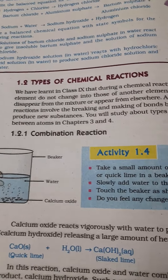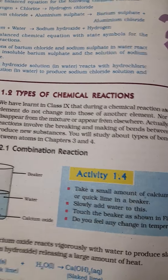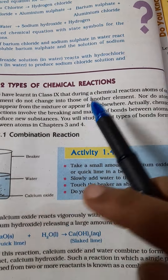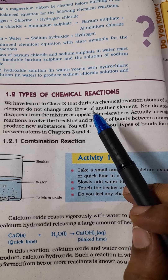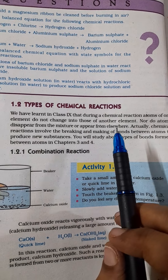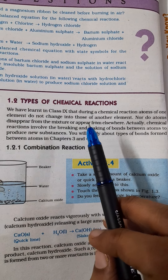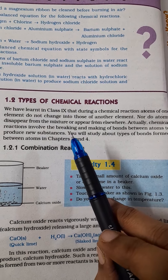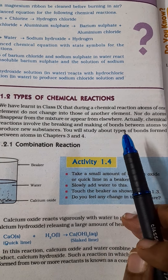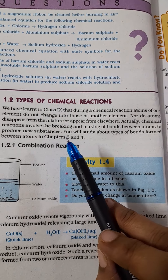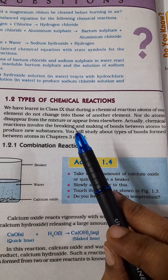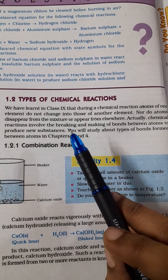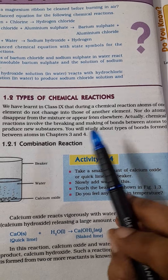Today I will be continuing with the types of chemical reactions. Now, you have already learnt what is meant by a chemical reaction. In Class 9 also you learnt that during chemical reactions, atoms of one element do not change into those of another element, nor do atoms disappear from the mixture or appear from elsewhere. During a chemical reaction, what actually happens is the making and breaking of bonds between atoms to form new substances.